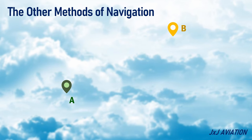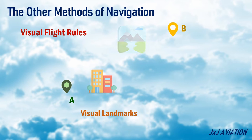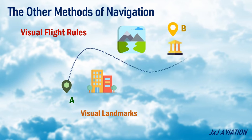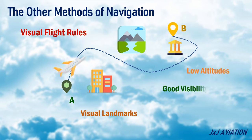The other methods of navigation. If we consider visual flight rules, or VFR, for flying from A to B, the pilot is relying on visual landmarks outside the aircraft. So the aircraft can only be flown at low altitudes, and there should be good visibility along the entire route.